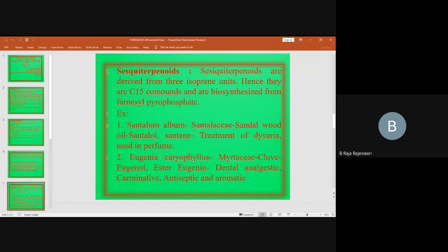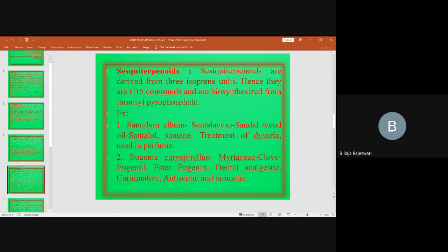Eugenia caryophyllus, Myrtaceae, clove, eugenol, ester, eugenine, dental analgesic, carminative, antiseptic, and aromatic.